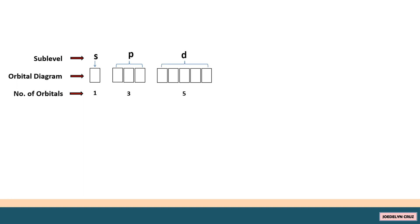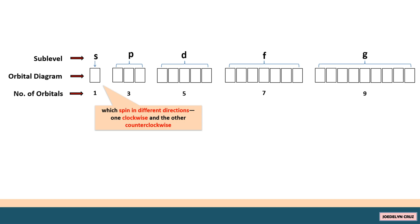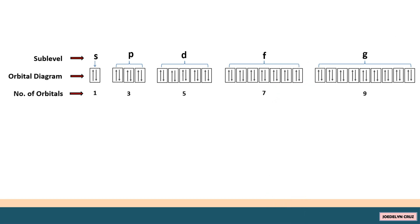The S sublevel has one orbital, represented by one box in the orbital diagram. The P sublevel has three orbitals, represented by three boxes. The D sublevel has five orbitals. The F sublevel has seven orbitals. The G sublevel has nine orbitals. Each orbital holds a maximum of two electrons spinning in different directions — one clockwise and the other counterclockwise. So the maximum number of electrons is: S = 2, P = 6, D = 10, F = 14, and G = 18 electrons.